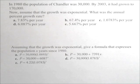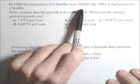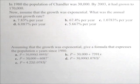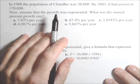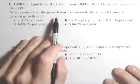In this problem, the population of Chandler in 1980 was 30,000. By 2003, it had grown to 170,000. The first question is: assuming the growth was exponential, what was the annual percent growth rate?